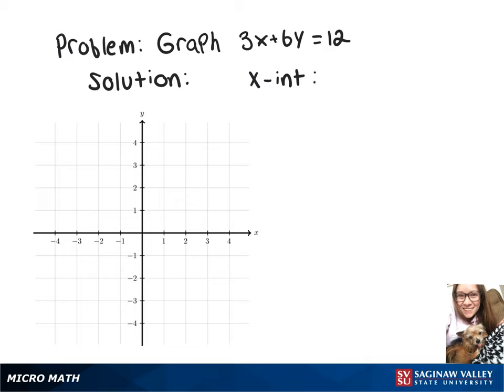To find the x-intercept, we set y equal to 0, and that will leave us with 3x equals 12. Now divide by 3, and that will leave x equals 4. So the point there will be 4, 0.